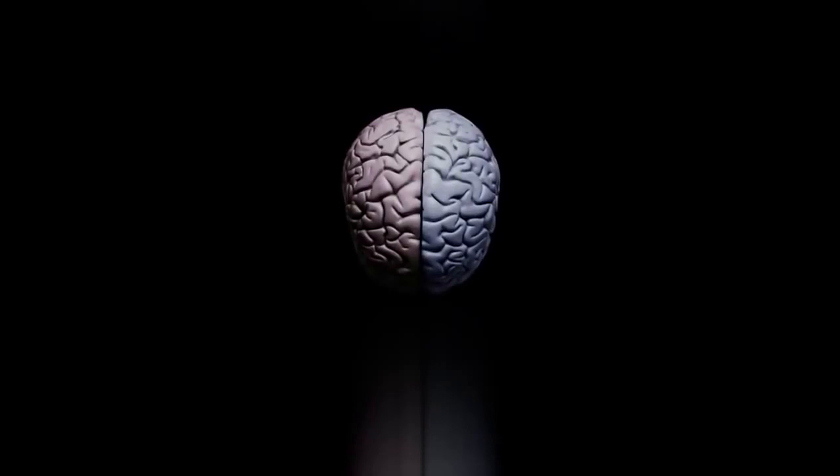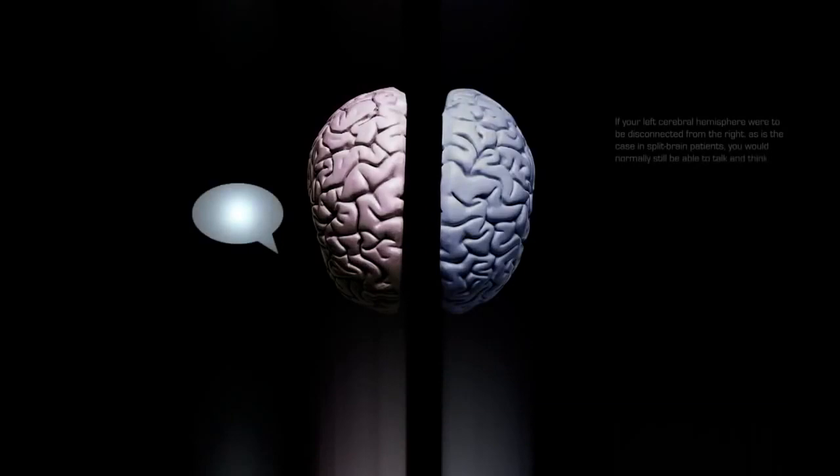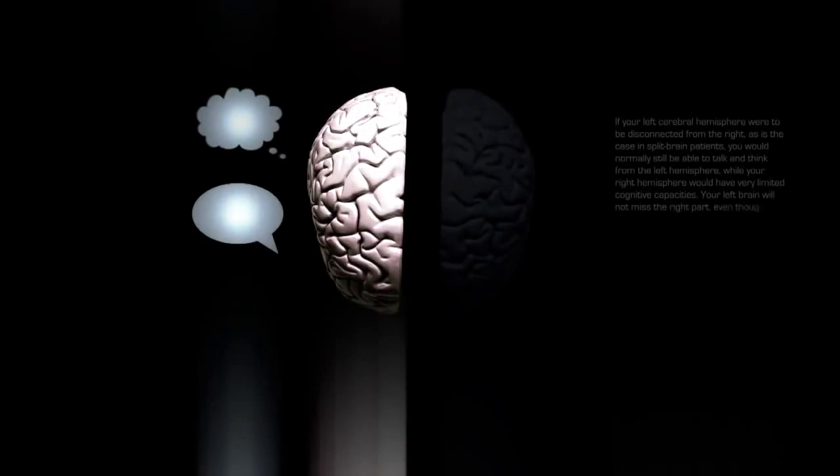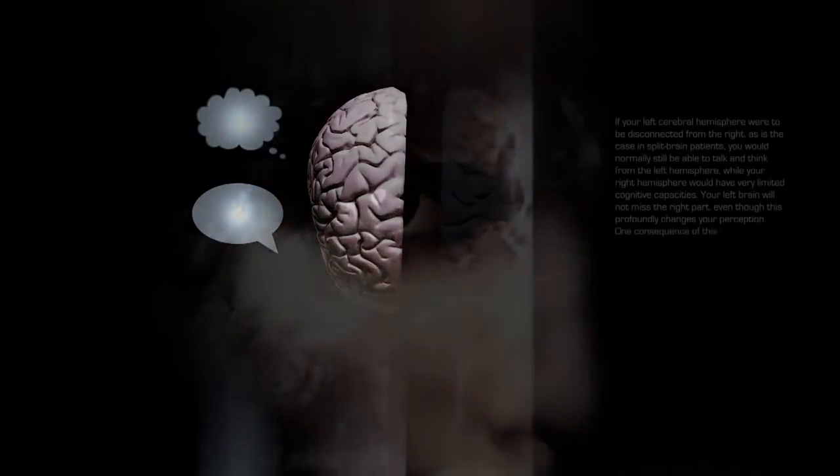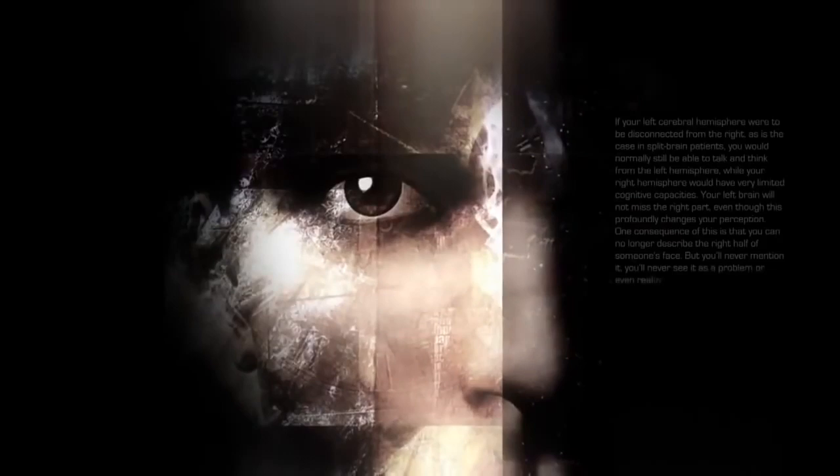If your left cerebral hemisphere were to be disconnected from the right, as is the case in split brain patients, you would normally still be able to talk and think from the left hemisphere, while your right hemisphere would have very limited cognitive capacities. Your left brain will not miss the right part, even though this profoundly changes your perception. One consequence of this is that you can no longer describe the right half of someone's face, but you will never mention it. You will never see it as a problem or even realize that something has changed.